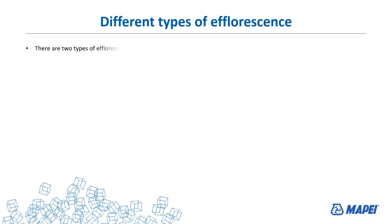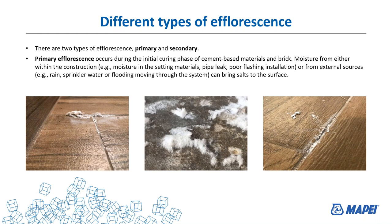There are two different types of efflorescence. Primary efflorescence occurs during the initial curing phase of cement-based materials and items like brick. Moisture from within the construction — from setting materials, a pipe leak, poor flashing installations, or from external sources like rain, sprinklers, or flooding — can bring salts to the surface in a variety of ways. You can see how heavily this stuff can actually build up on the surface of grout and tile.